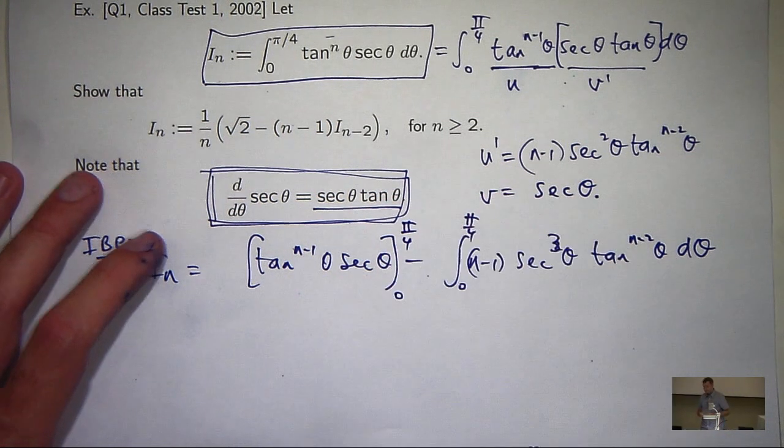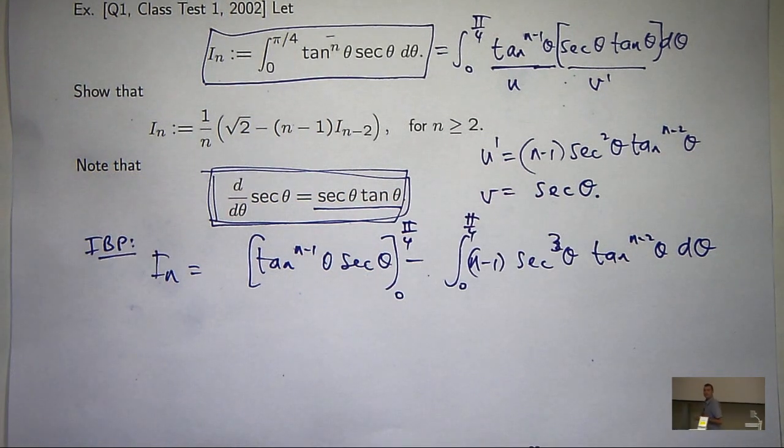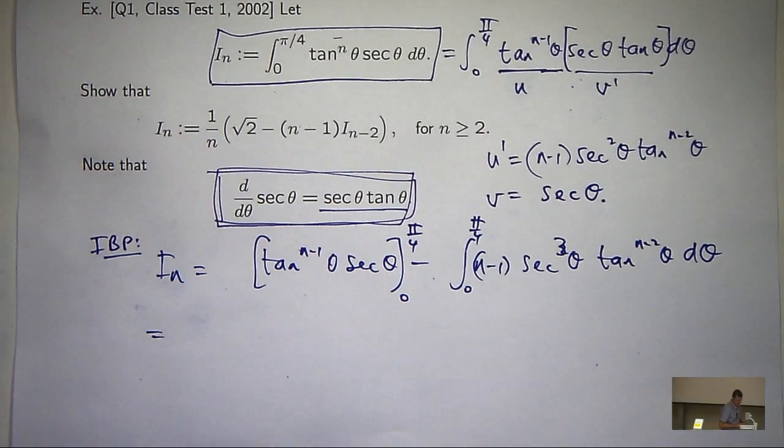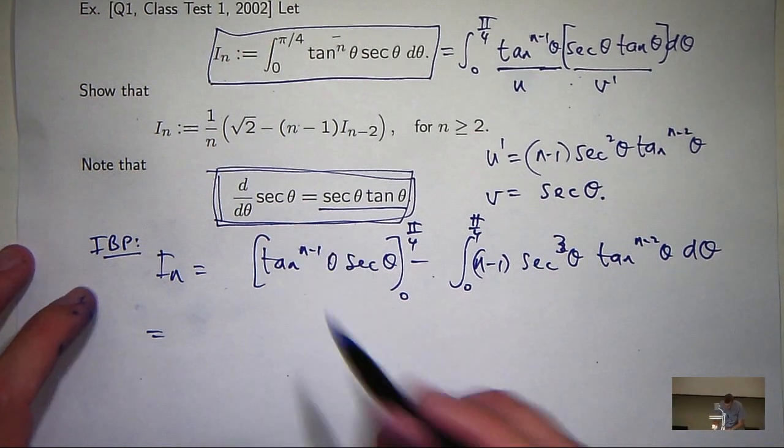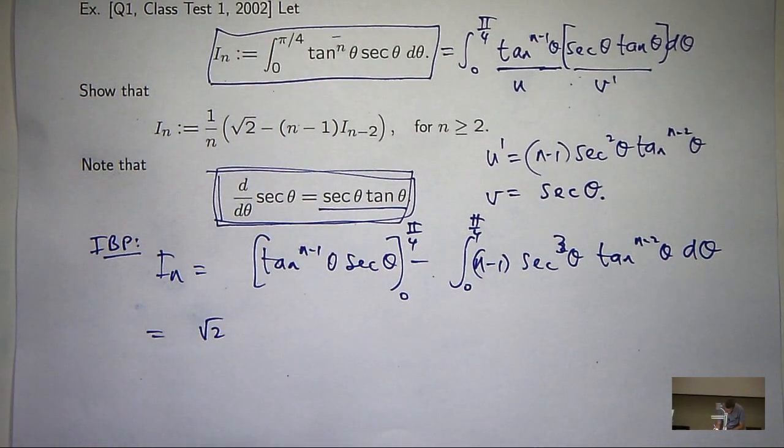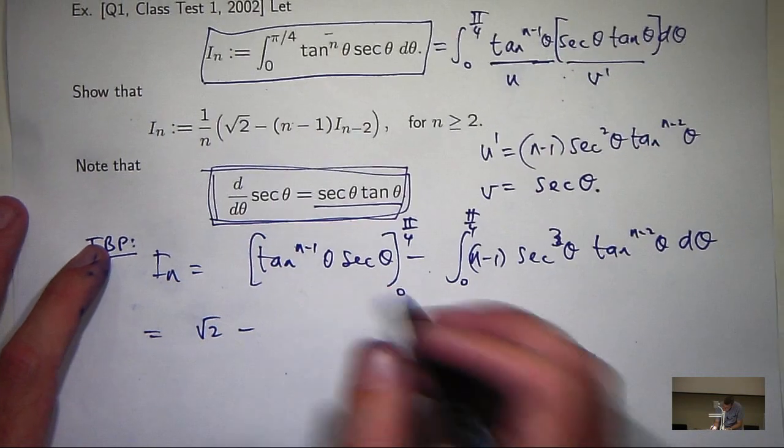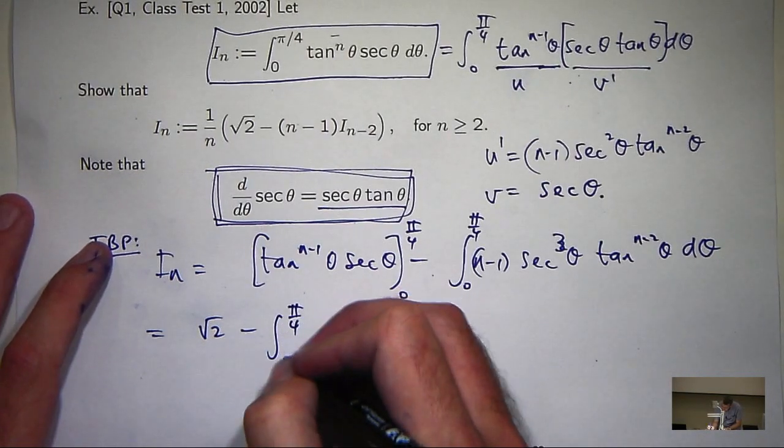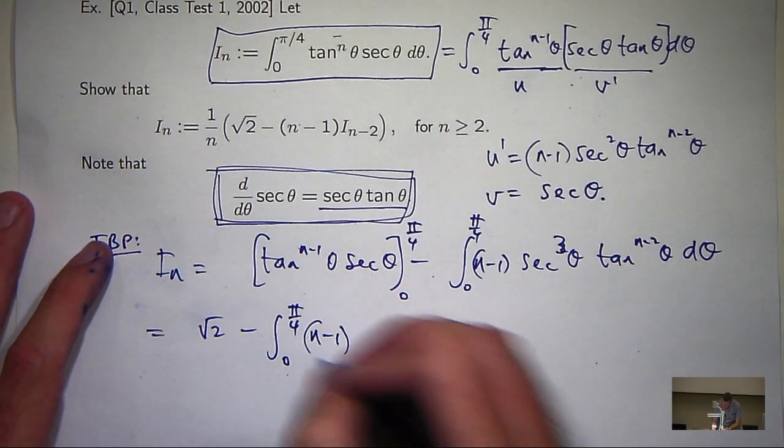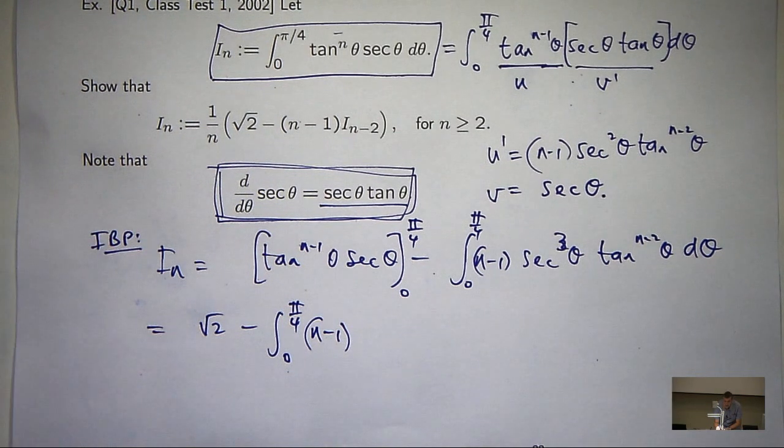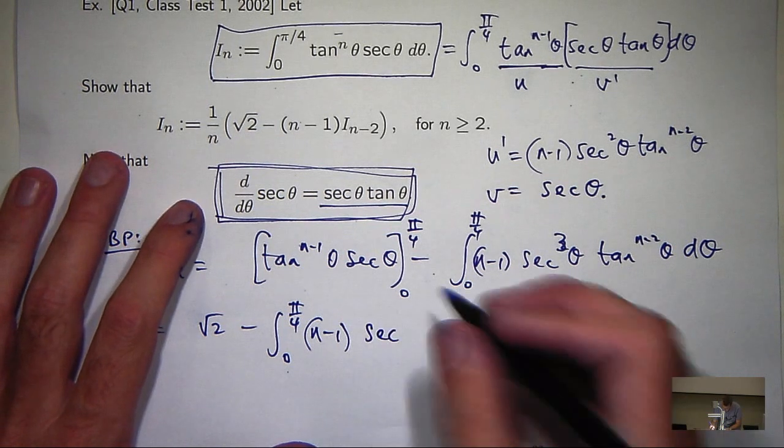So the definite integrals, so we need to make this substitution. Right. So what's this going to be? It's going to be actually going to simplify down to root 2, that first bracket. Right. So what am I going to replace sec squared with? 1 plus tan squared.